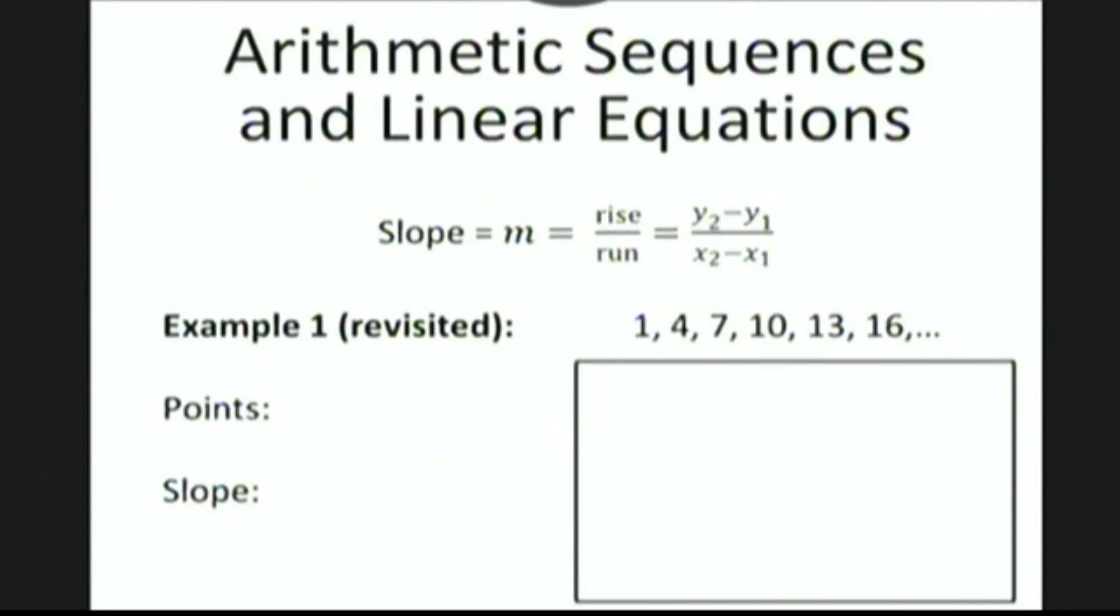Let's look at this sequence from the first example: 1, 4, 7, 10, 13, and so on. Remember that this is an arithmetic sequence, and we can identify this sequence with points as follows. Notice that the first term of the sequence is 1, the second term is 4, the third term is 7, and so on.